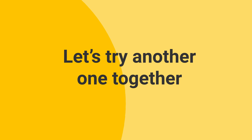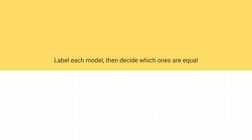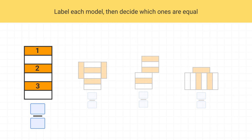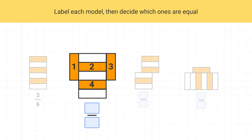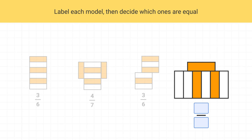Let's try another one of these together. Let's label each of these and determine which ones are equal. This first shape has three shaded pieces out of a total of six, so this is three-sixths. The next shape has four shaded pieces out of a total of seven, so it's four-sevenths. This next one has three shaded pieces out of a total of six, so it's three-sixths. And finally, this last model has three shaded pieces out of a total of seven, so this is three-sevenths.